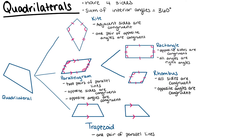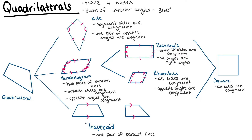We can then take the combination of our rectangle and rhombus and come up with a square. In a square, all four sides are congruent, just like in our rhombus, and all four angles equal 90 degrees, just like in our rectangle. So a square is a type of parallelogram where all sides are congruent and all angles are congruent and equal 90 degrees.